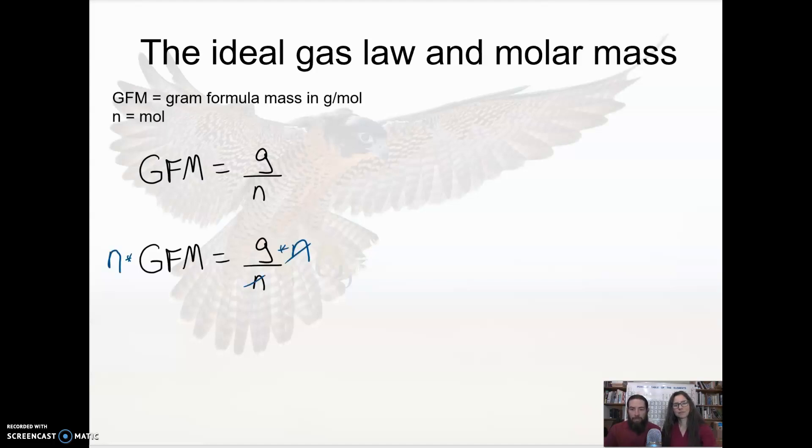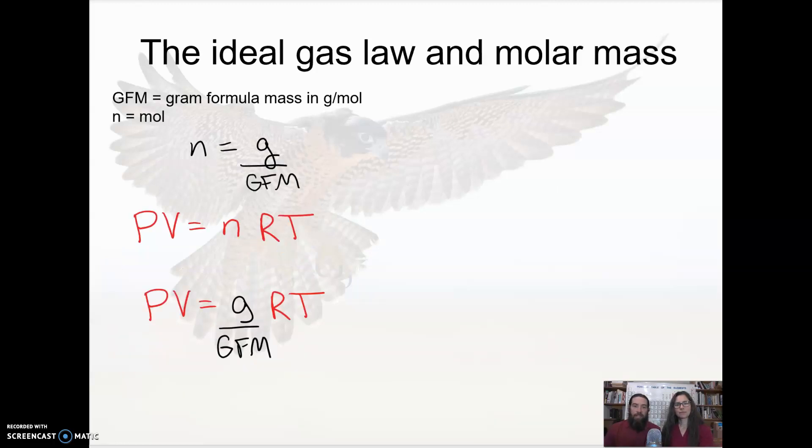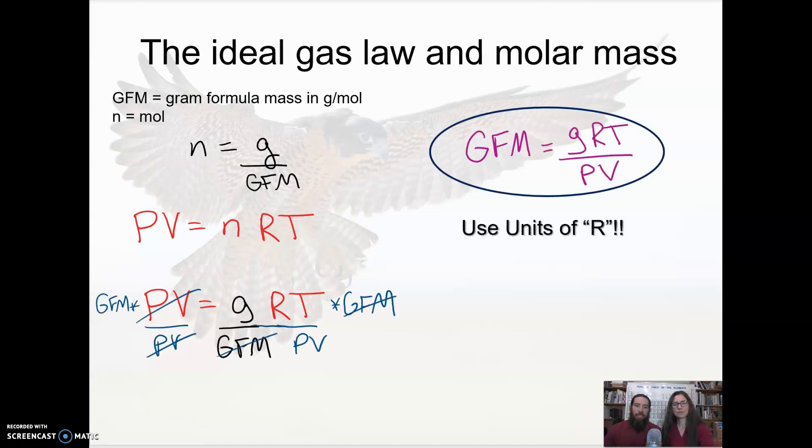Now if I do a little bit of manipulation here and multiply both sides by n, I get n times gram formula mass equals grams. Well let's manipulate this a little bit more. If I divide both sides by the gram formula mass, you see it cancels on the left, I'm left with n equal to grams over gram formula mass.